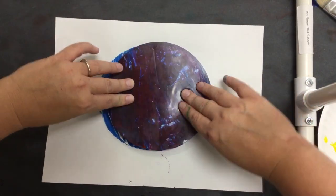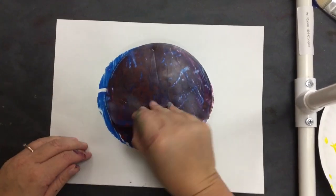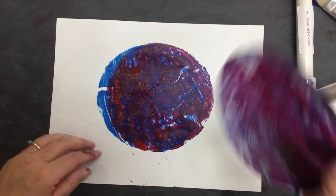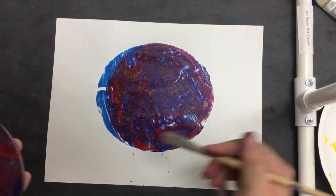Now I'm going to print maybe right on top of my blue, right next to it, to show some layers. I'm just kind of pressing it down and then I'll pull it up, and you can see my layers.